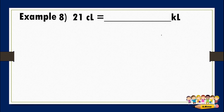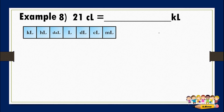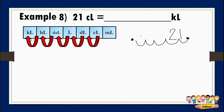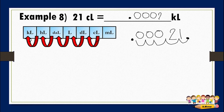For number eight, convert 21 centiliters to kiloliters. We write the given: 21. Since this is a whole number, the decimal point is at the right side of the last digit. From centiliters to kiloliters: one, two, three, four, five — five movements to the left. We move the decimal point five times to the left. There are no numbers in those spaces, so we add three zeros. A decimal number must not start with a decimal point, so we add a leading zero. The answer is 0.00021.